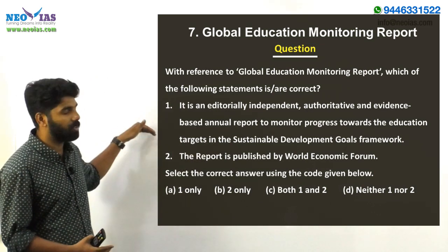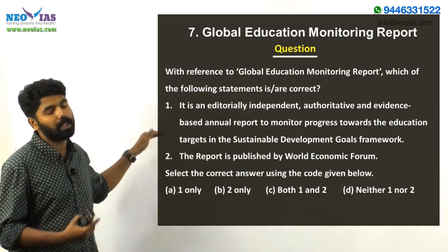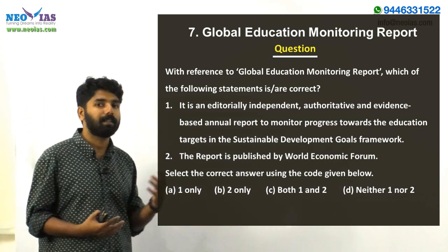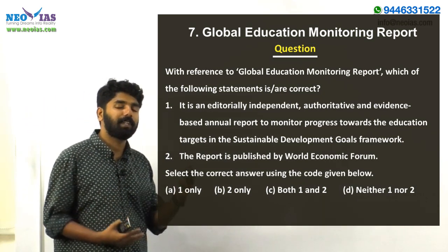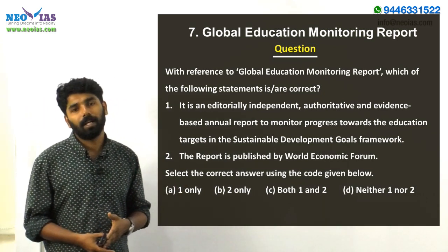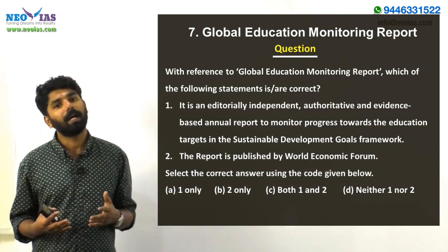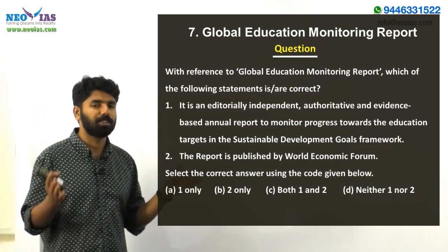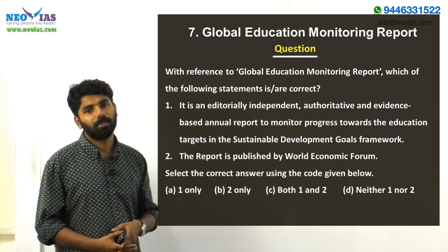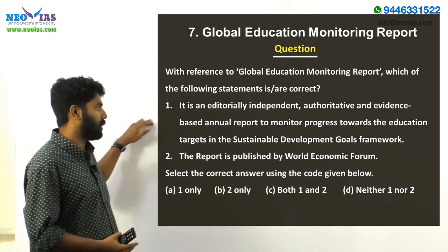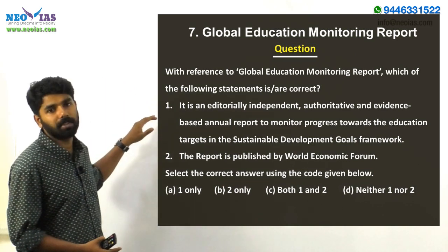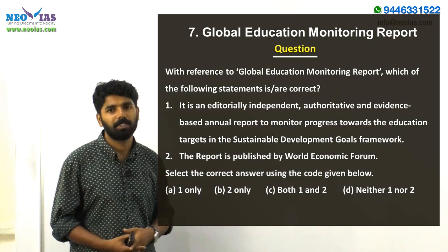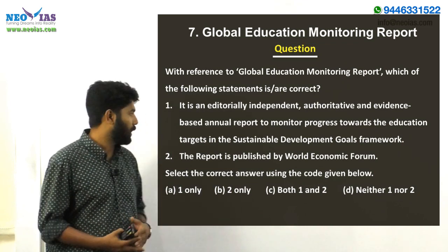The first statement is correct because the Global Education Monitoring Report is indeed an independent, evidence-based, and authoritative annual report that monitors progress towards education mentioned in the SDGs. Since the first statement is correct, we can eliminate options B and D, which do not include statement one as correct.